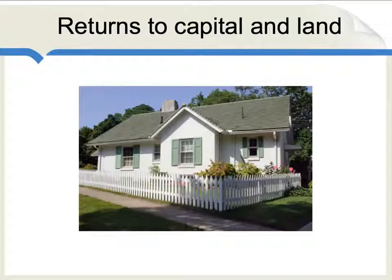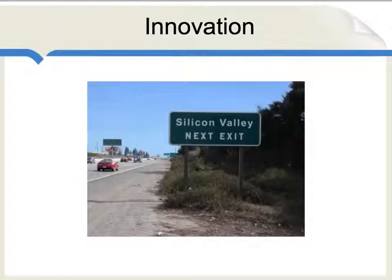Immigration also increases returns to capital and returns to land. The Borjas estimates are really just about wages, but it's generally accepted that capital owners are better off, and it's often been suggested that the United States should allow in more immigrants to boost its currently struggling real estate market. Finally, a lot of immigrants create new jobs or maybe even new economic sectors altogether. If you look at Silicon Valley, a lot of the new companies there are the result of immigrant entrepreneurship, where the immigrants come from India, China, Russia, and many other places.